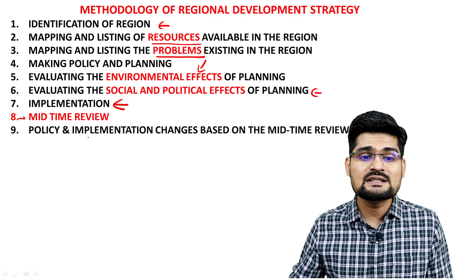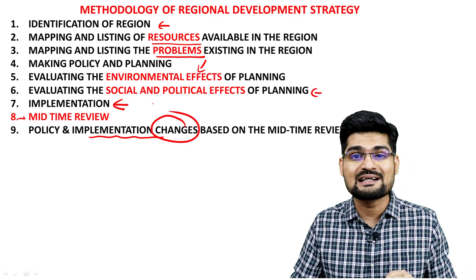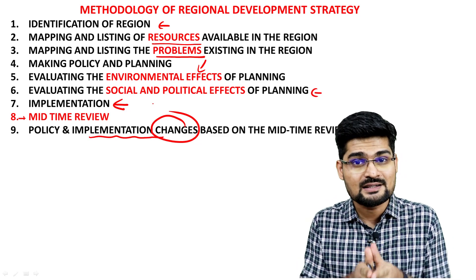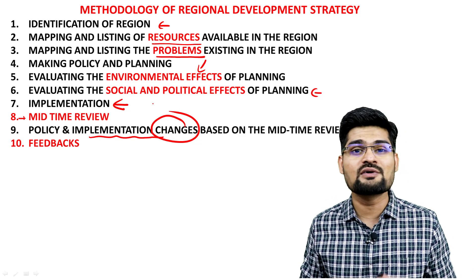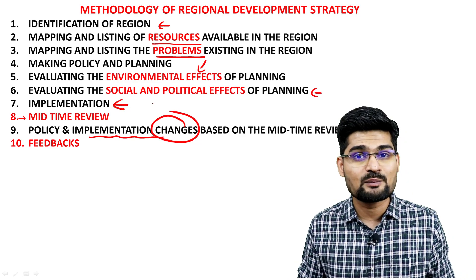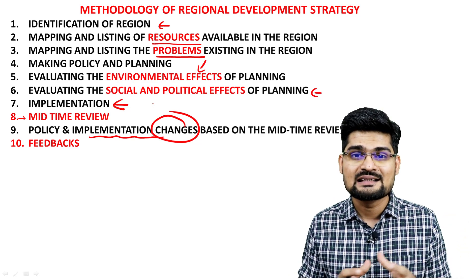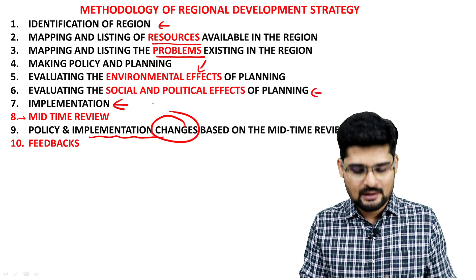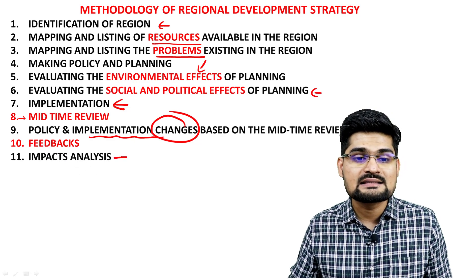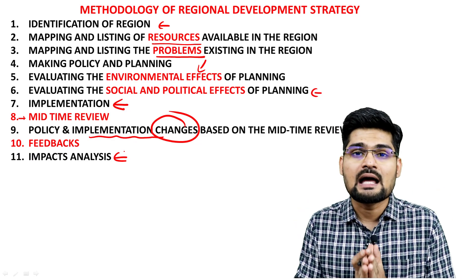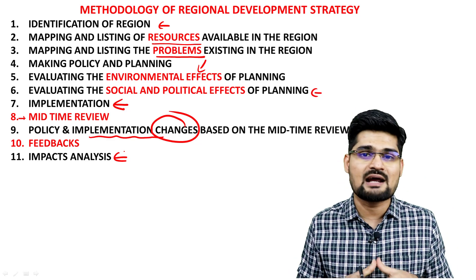The eighth step is policy implementation changes based on the review while it is being implemented — if there is any change that should be considered, that is what we do. Ninth is the feedback mechanism, very important for regional development strategy today: if you are getting negative feedback, change the process and the ideas, look into the result again, and give feedback. The last step is impact analysis.